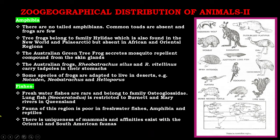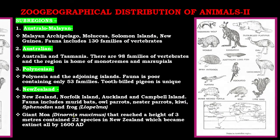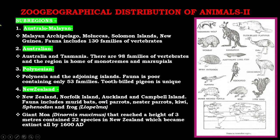The Australian region is divided into four sub-regions. Number one is the Austro-Malayan sub-region, which includes the Malayan archipelago, Moluccas, Solomon Islands, and New Guinea; fauna includes 130 families of vertebrates. Number two is the Australian sub-region, which includes Australia and Tasmania; there are 98 families of vertebrates, and the region is home to monotremes and marsupials.